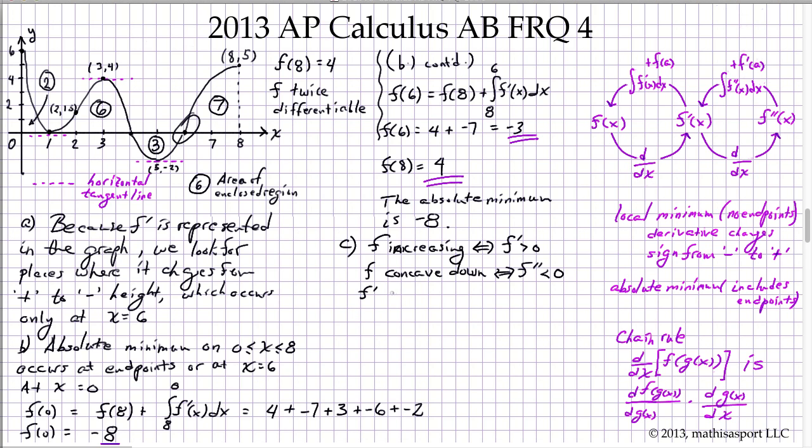f prime is the height of the graph, and f double prime is the slope of the tangent line to the graph.